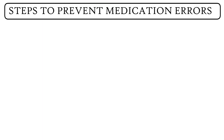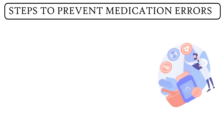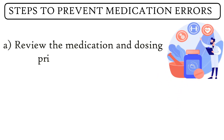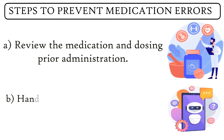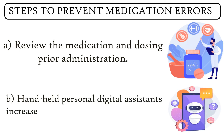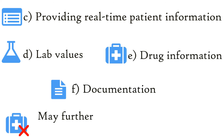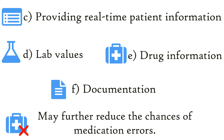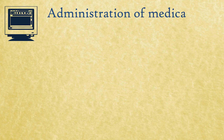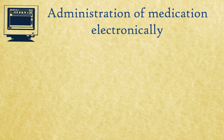Now let us look at steps to prevent medication errors. The first step to avoid medication error is to review the medication and dosing prior to administration. Handheld personal digital assistants increase medication safety by providing real-time patient information, lab values, drug information, and documentation, which may further reduce the chances of medication errors.